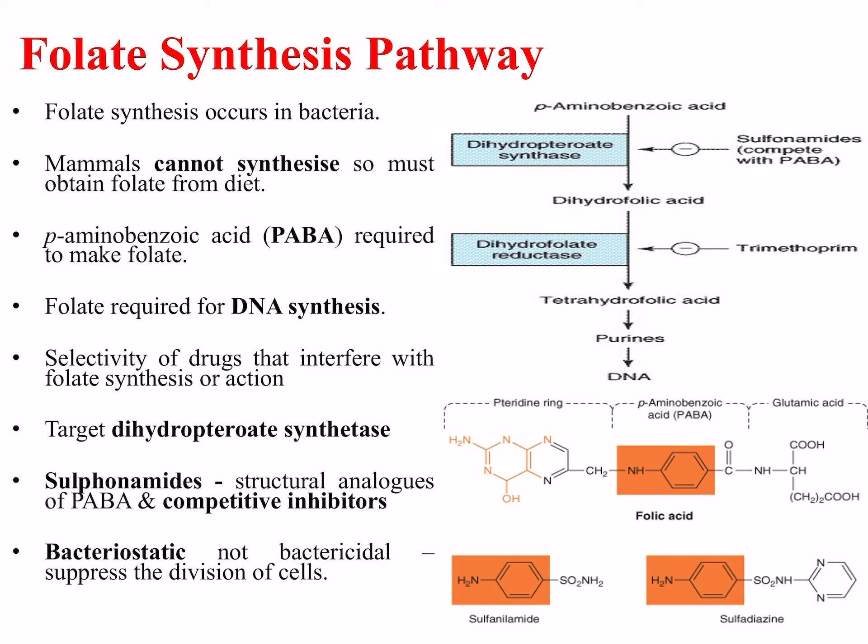As the pathway in the diagram shows, this is a two-step reaction involving two enzymes: one called dihydropteroate synthase and the other called dihydrofolate reductase, or DHFR. These are involved in forming tetrahydrofolic acid, which is used to form the purine nucleotides in DNA. This allows for selectivity of drugs that interfere with folate synthesis. Some target dihydropteroate synthase, such as sulfonamides.